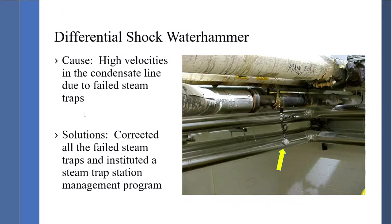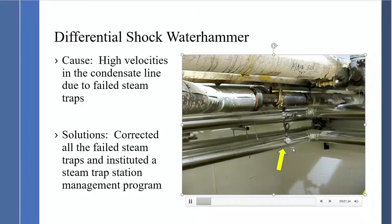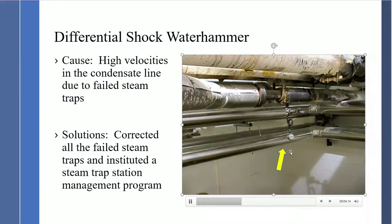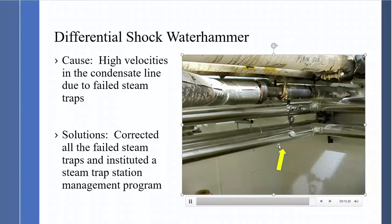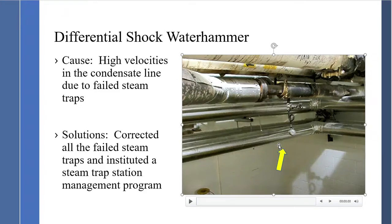An example of high velocities in a condensate line: watch the pressure gauge — you can see it spike when the wave comes down the condensate line. The pipe supports were damaged and near failure, with flange failures and weld failures occurring. The correction was implementing a proper steam trap management program, as so many steam traps had failed and were blowing steam through, causing the high velocity in the condensate line.